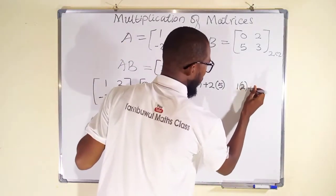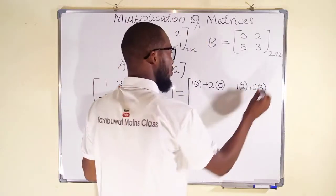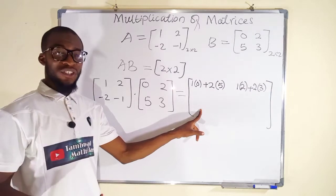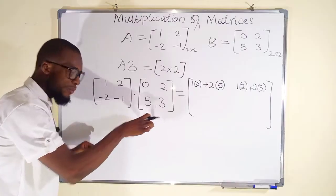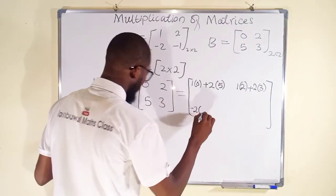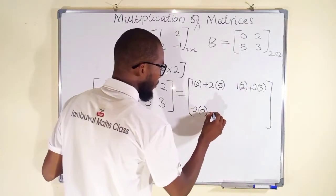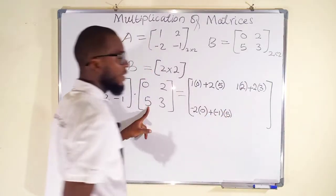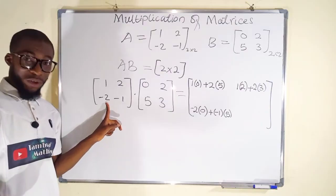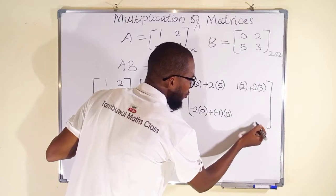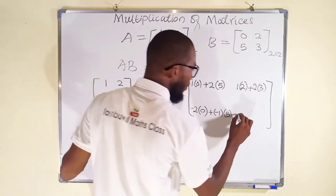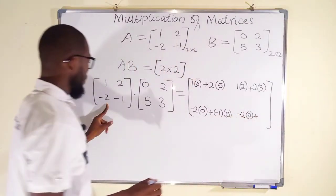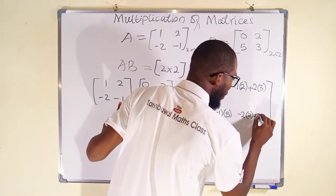To obtain the element at position (2,1), we take the second row and multiply by the first column: 2 multiplied by 0 plus -1 multiplied by 5. Then for position (2,2), we take the second row and multiply by the second column: 2 times 2 plus -1 times 3.